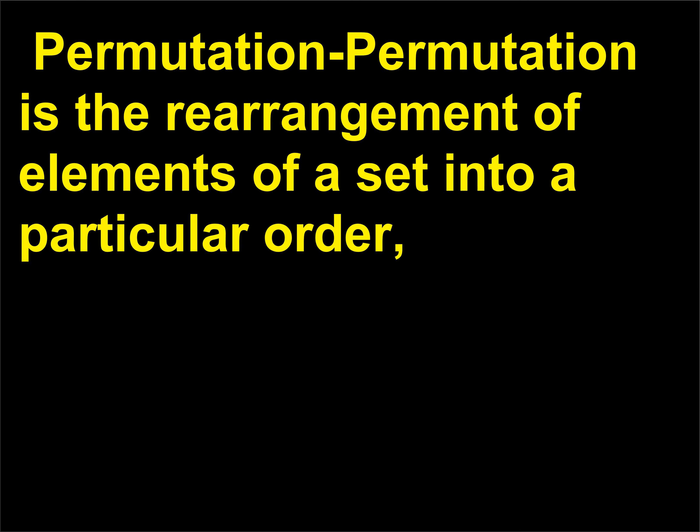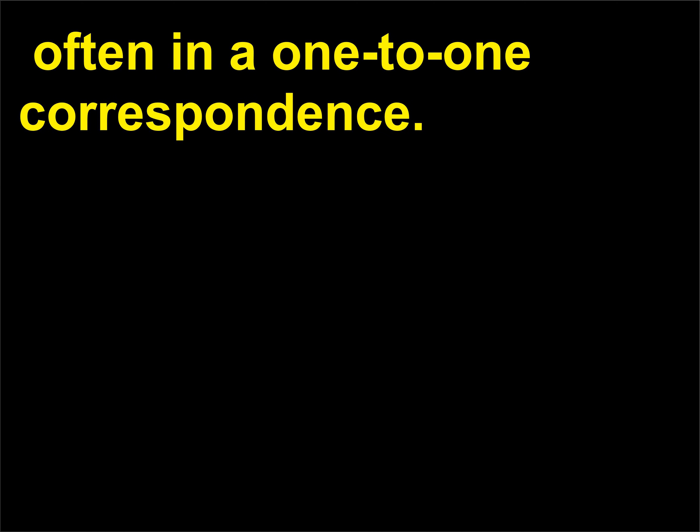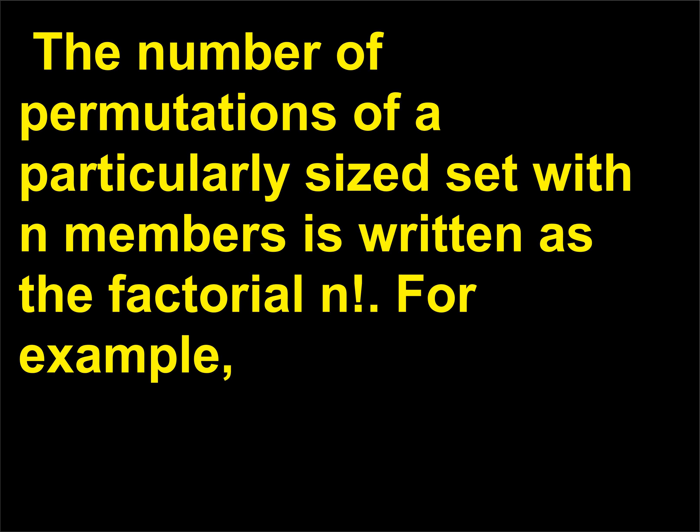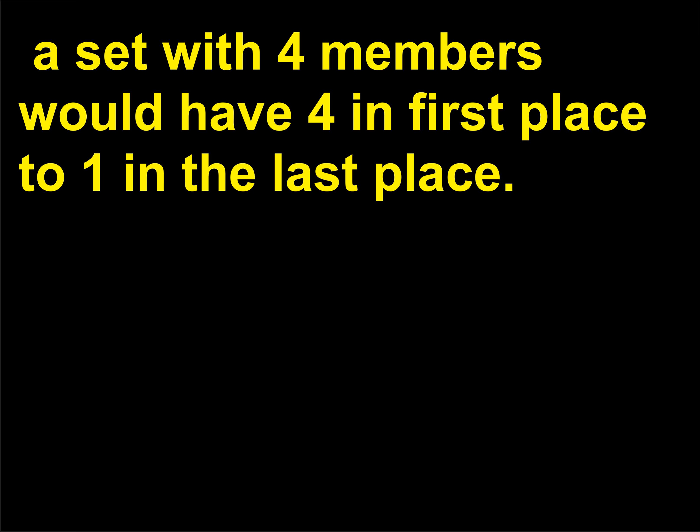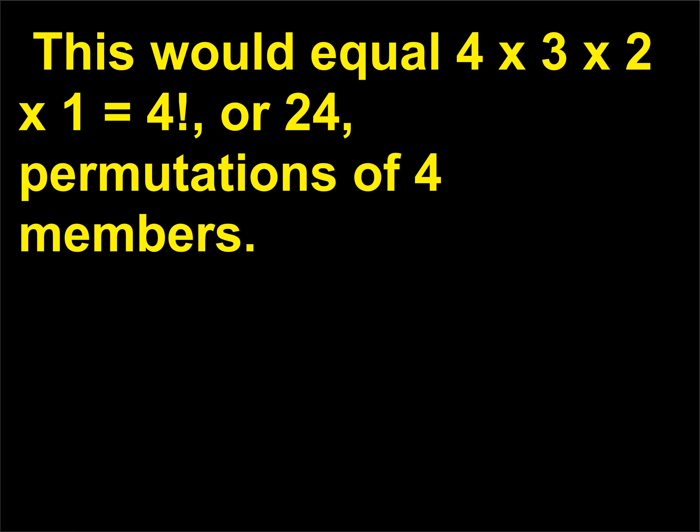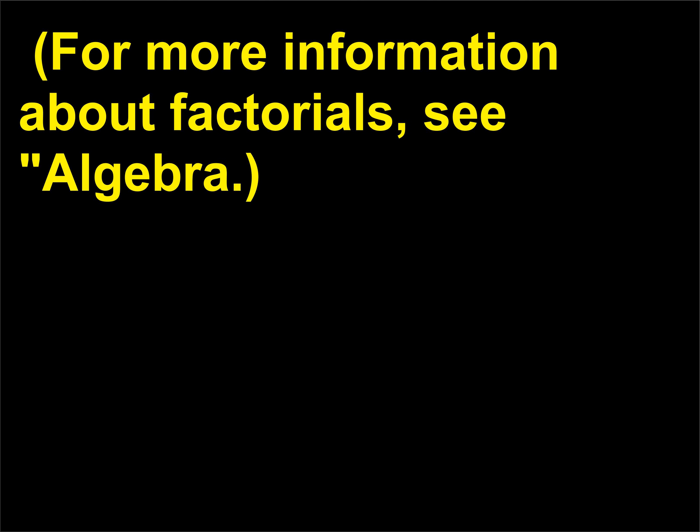Permutation: the rearrangement of elements of a set into a particular order, often in a one-to-one correspondence. The number of permutations of a set with N members is written as the factorial N. For example, a set with four members would have 4×3×2×1 = 4!, or 24, permutations of four members. For more information about factorials, see algebra.